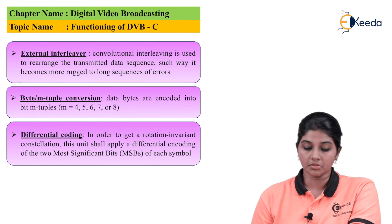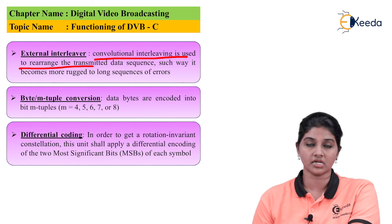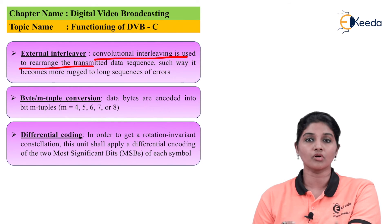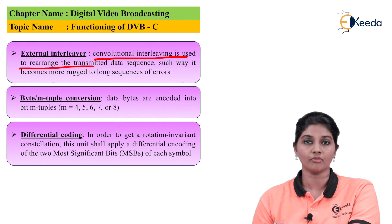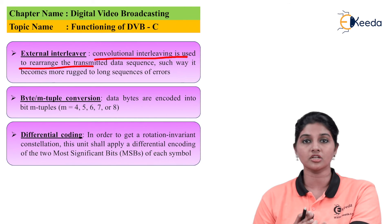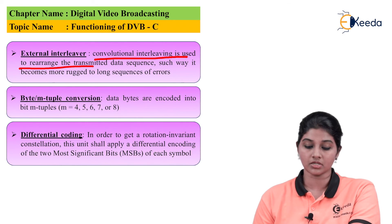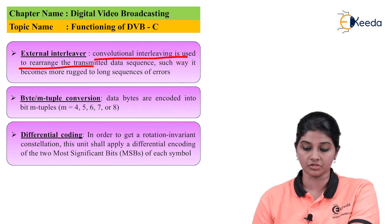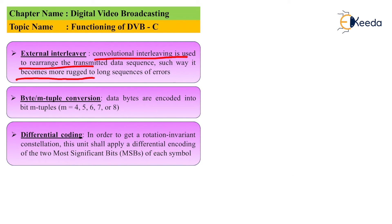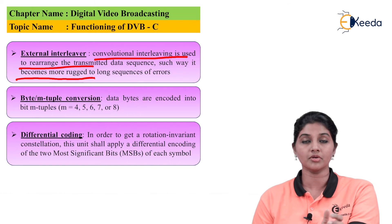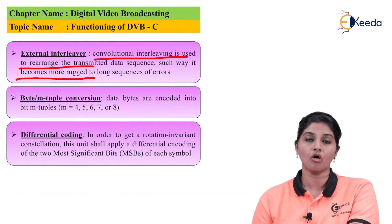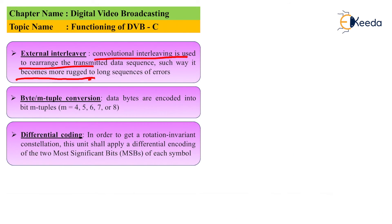The next block is the external interleaver, which uses convolutional interleaving to rearrange the transmitted data sequence into a proper sequential form. This makes the signal more stable for long transmission or for handling long sequences of errors.